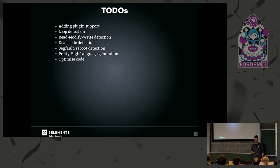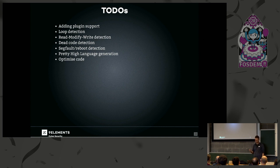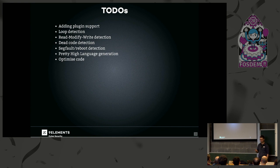There are quite a few to-do's. We would like to add plugin support, detect loops inside the firmware — because right now we can't — detect read-modify-write operations where usually only one bit is set or cleared. There's no dead code detection, so if we run into a code path we shouldn't, it just crashes and we won't see that. We have no segfault or reboot detection. We need to work on making pretty C code and optimizing the abstract syntax tree even more.